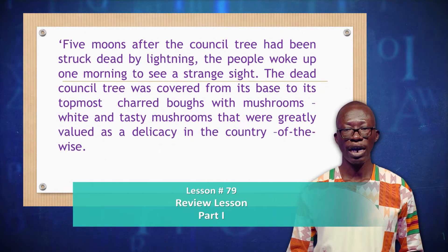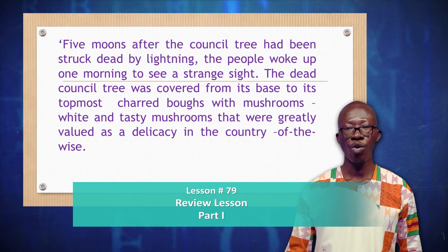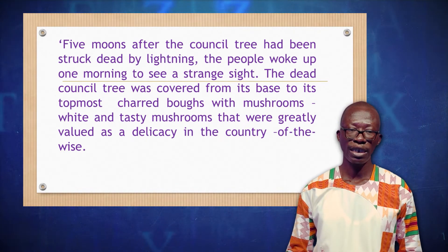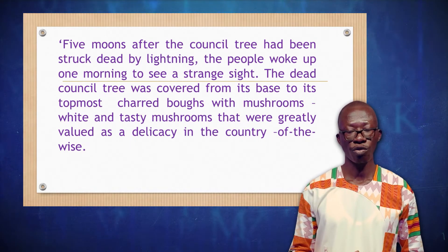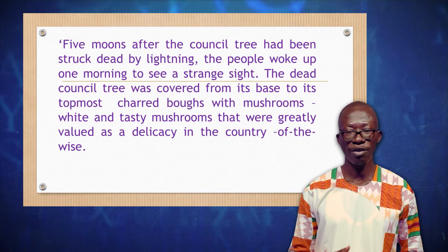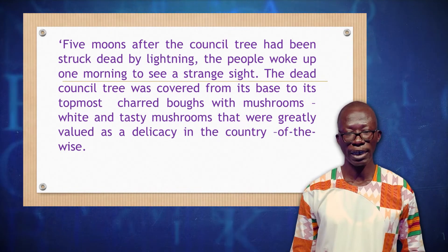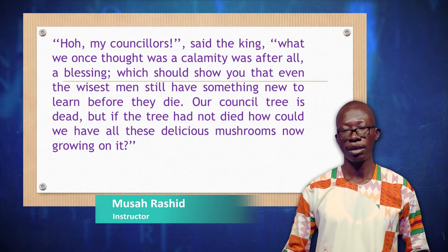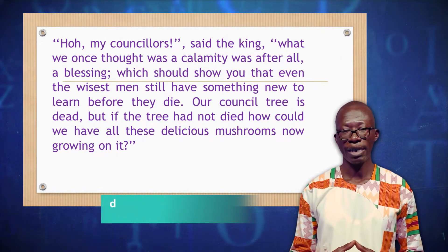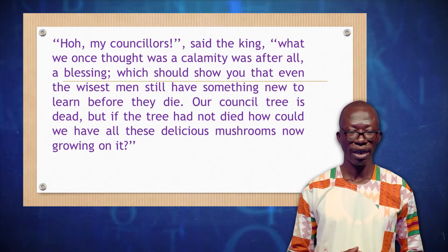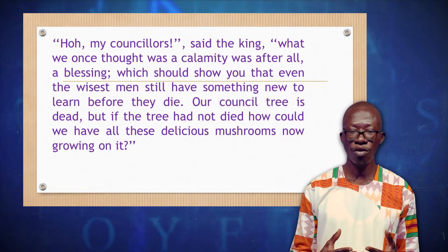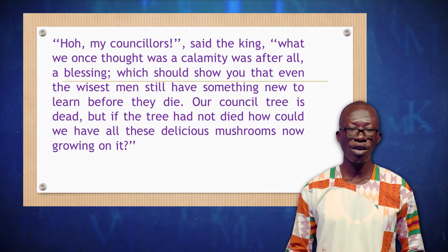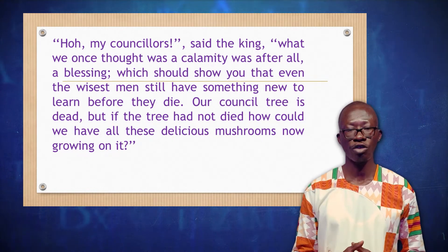Five moons after the council tree had been struck dead by lightning, the people woke up one morning to see a strange sight. The dead council tree was covered from its base to its utmost branches with mushrooms — white and tasty mushrooms that were greatly valued as a delicacy in the country of the wise. Oh, my counselors, said the king, what we once thought was a calamity was, after all, a blessing. We should know that even the wisest men still have something new to learn before they die. Our council tree is dead. But if the tree had not dried, how could we have all these delicious mushrooms now growing on it?